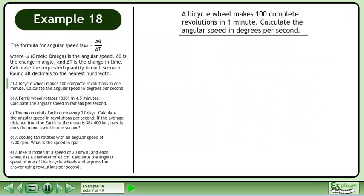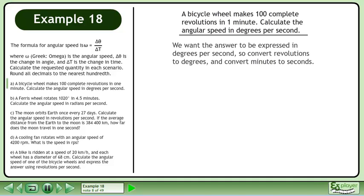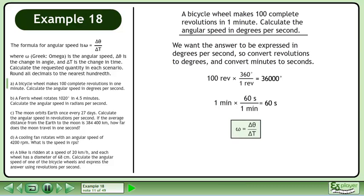Now we'll answer the question in Part A. We want the answer expressed in degrees per second, so convert revolutions to degrees and convert minutes to seconds. Convert 100 revolutions to degrees using the conversion multiplier 360 degrees over 1 revolution, giving us 36,000 degrees. Plug in 36,000 for the change in angle and 60 seconds for the change in time. This gives us 600 degrees per second.